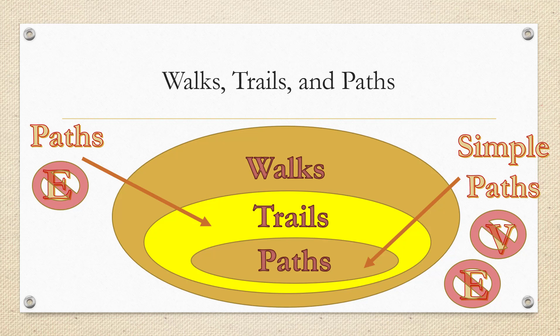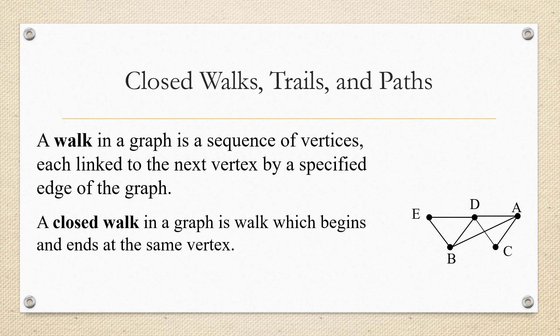Now we're going to add another category called being closed. Being closed in graph theory just means that we begin and end at the same vertex. A closed walk has the same characteristics as a walk — it stays on the graph — but it just begins and ends at the same vertex. For example, a closed walk might be: start at E, go to D, go to C, go to A, go back to D, and back to E again. So it begins and ends at the same vertex.